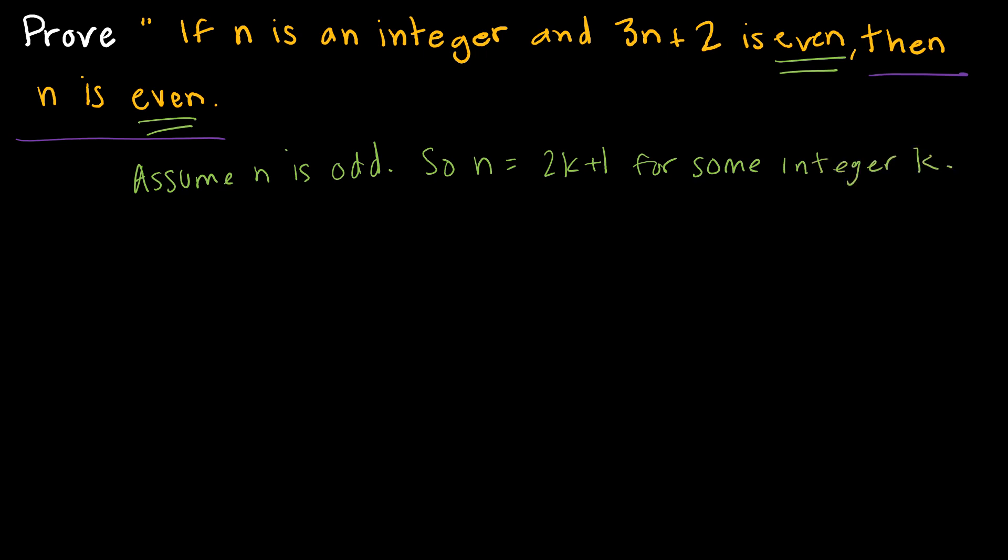So far, so good. Now I can say 3N plus 2 is the same as 3 times 2K plus 1 plus 2. Do a little bit of rearranging or distributing 6K plus 3 plus 2.